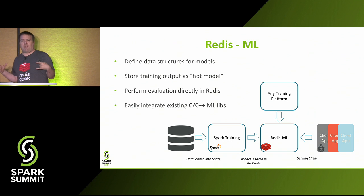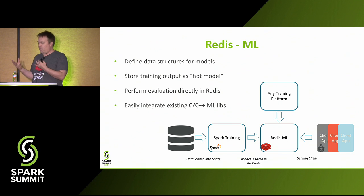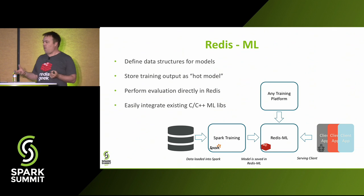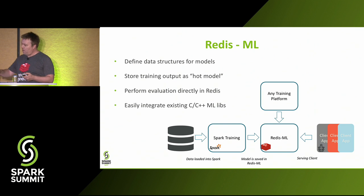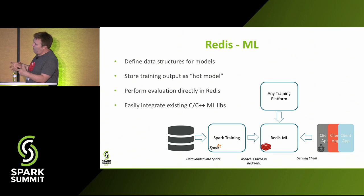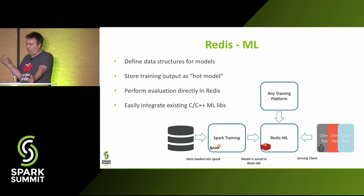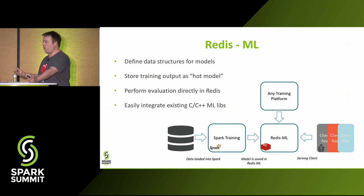When we look at Redis ML and the machine learning module, what we're doing is defining data structures for machine learning models as essentially native Redis data types. You can store these data as hot models, and then use Redis as your evaluation, scoring, and inference engine. You can also easily integrate additional machine learning modules written in C++. You can see a graphic here that represents what a machine learning pipeline would look like using Redis ML. You're not limited to Spark, but we provide a lot of good features to make it easy to use Spark with Redis ML, and we built connectors that make it very easy to connect Spark to the Redis ML module.